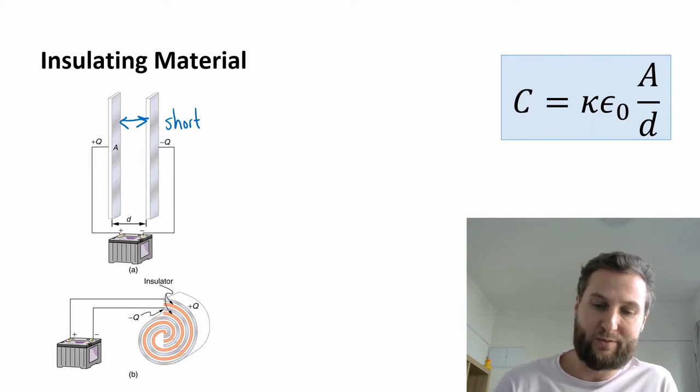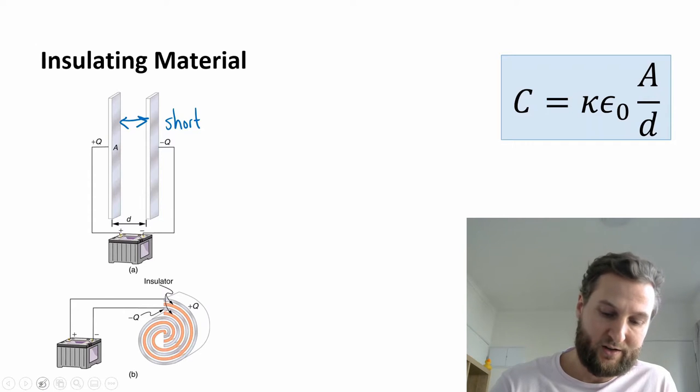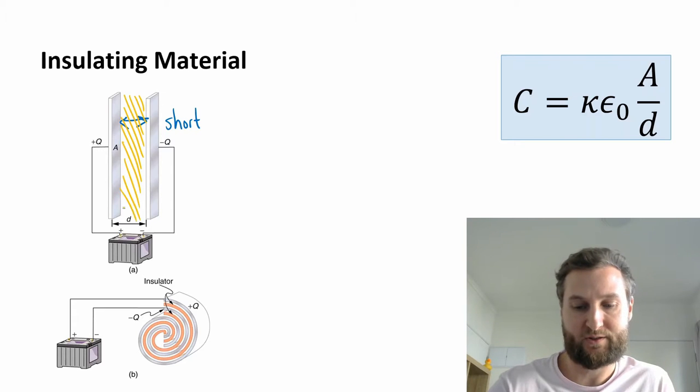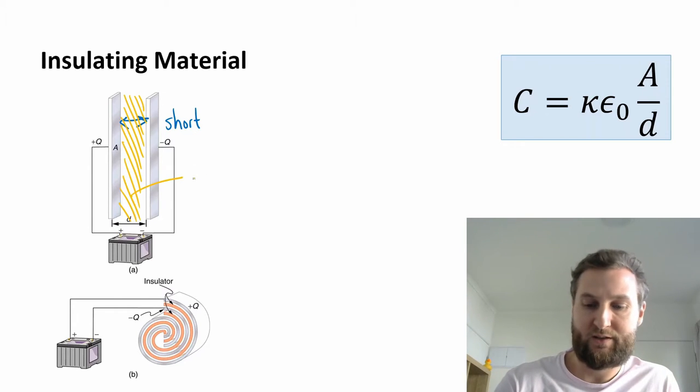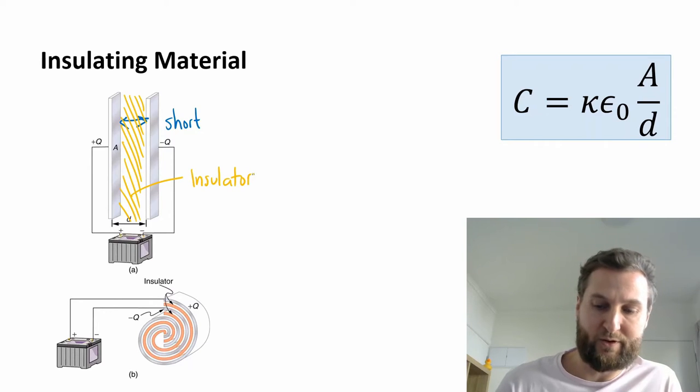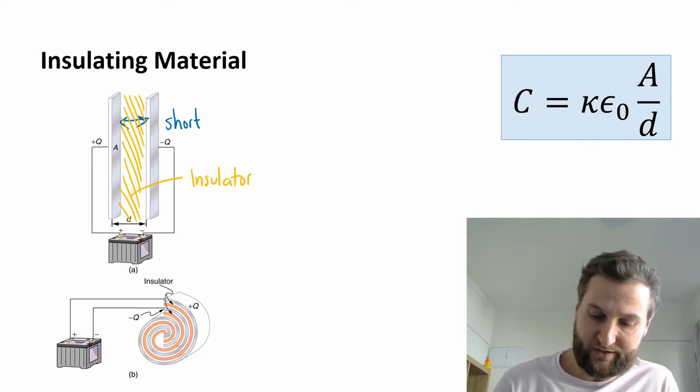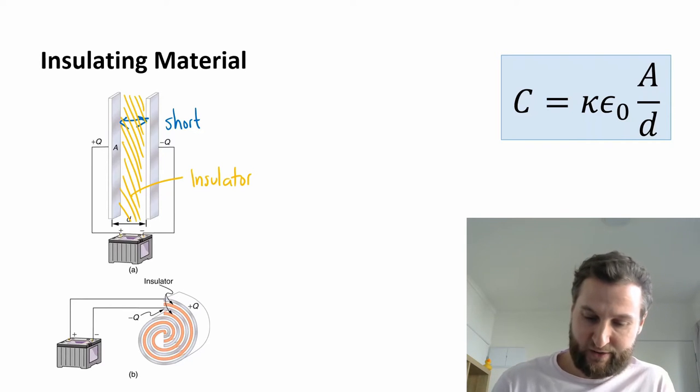You need to put something in between here in order to prevent the charge from permeating that free space. So we need some insulator if we're going to improve the design of our capacitor. That's what we see down here at the bottom. We have this red spiraled carpet all rolled up, and that represents an insulator.